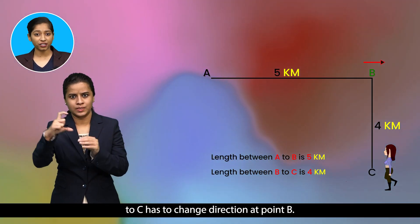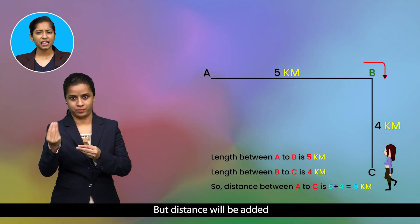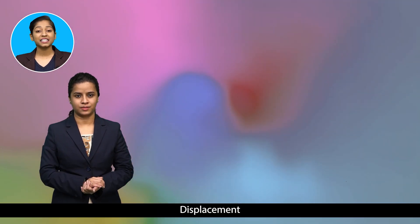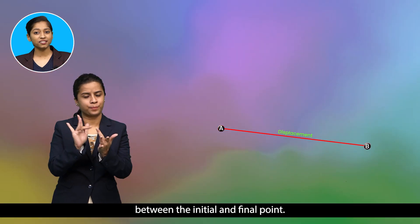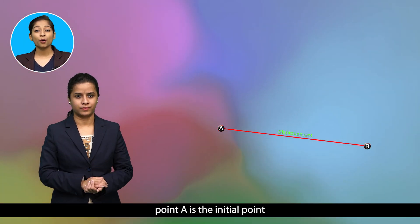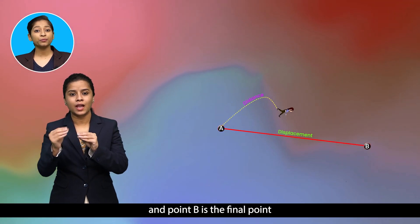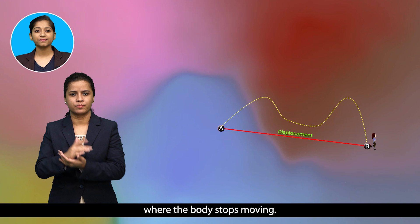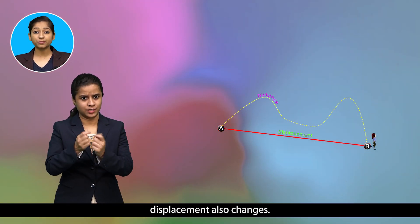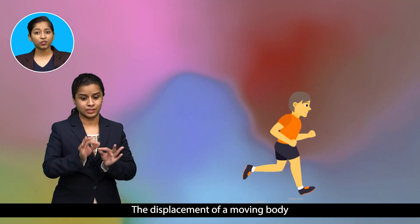Here, a person moving from point A to C has to change direction at point B, but distance will be added even if the direction is changed. Displacement is the shortest distance along with direction between the initial and final point. Point A is the initial point from where a body starts moving, and point B is the final point where the body stops moving.